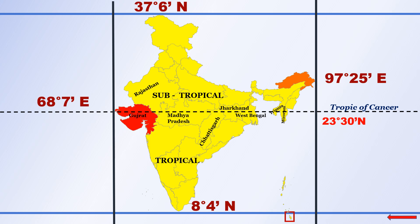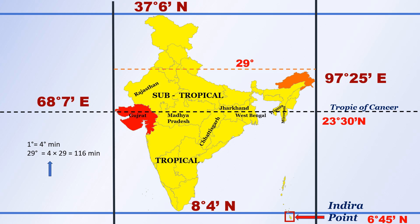The southernmost tip of India is the Indira Point, located at 6°45' north latitude. The longitudinal extent of India is approximately 29 degrees. As we know, 1 degree is equal to 4 minutes. Therefore, 29 degrees equals 4 × 29 = 116 minutes, which is approximately 2 hours. This means that if there is sunrise at 6 a.m. in Arunachal Pradesh, then in Gujarat, sunrise will occur at 8 a.m.